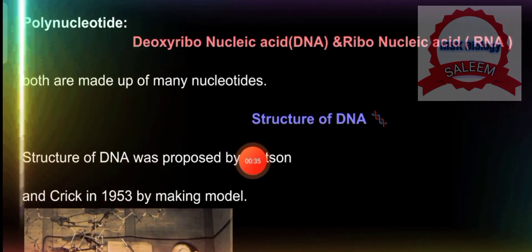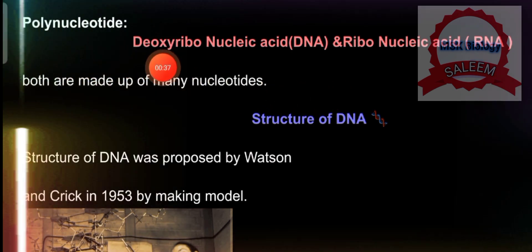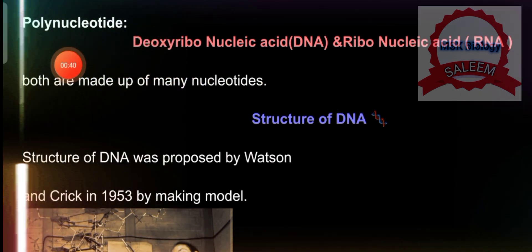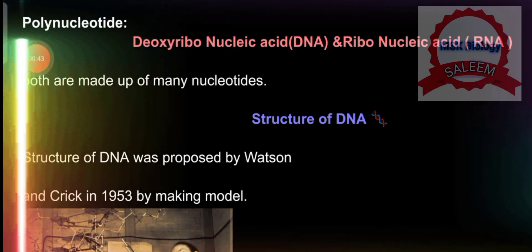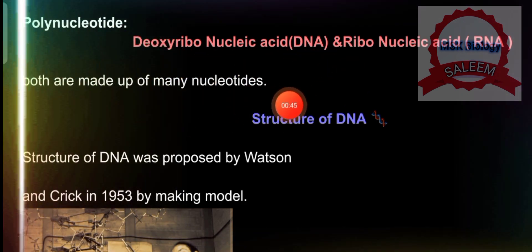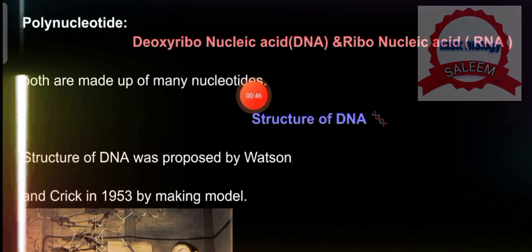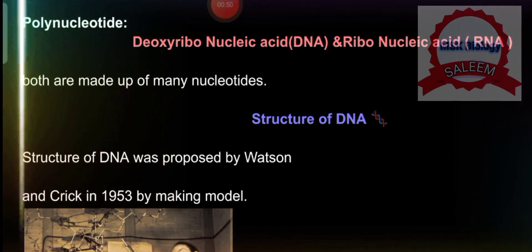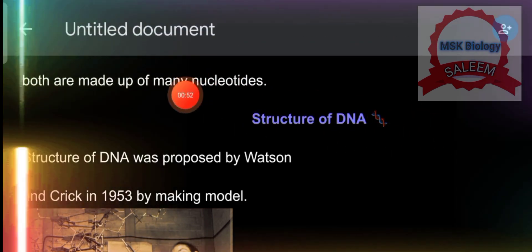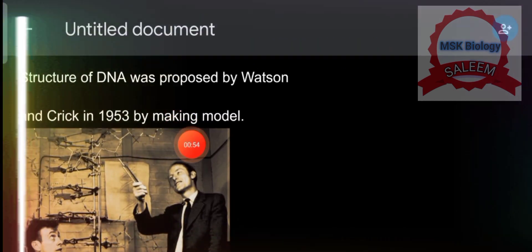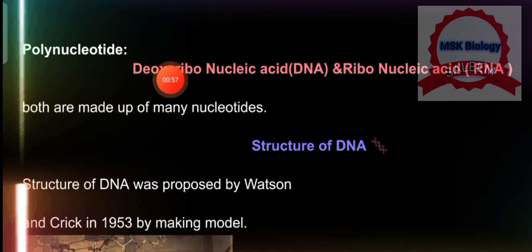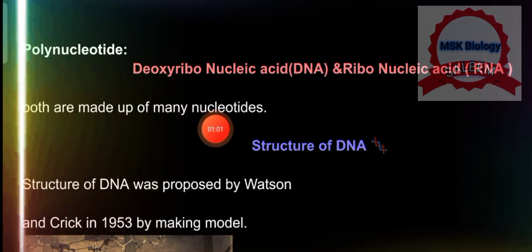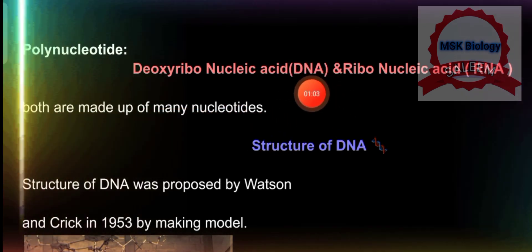Okay, let's start with polynucleotide. Poly means many, and nucleotide means nucleotide — nucleic acid made up of many nucleotides. Bahut zyada nucleotides ke bane hote hain unhe hum kahte hain polynucleotides. Examples of polynucleotides are deoxyribonucleic acid (DNA) and ribonucleic acid (RNA), both made up of many nucleotides — short form DNA and RNA.